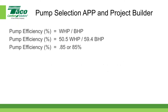Pump efficiency is equal to the water horsepower divided by the brake horsepower. In our case, the water horsepower was calculated at 50.5 and the brake horsepower was measured at 59.4. You divide 50.5 by 59.4 and you get 0.85, or 85%. So that's where pump efficiency comes from.